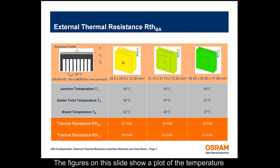The figures on this slide show a plot of the temperature distribution under steady-state conditions for heat sinks of various surface areas. Listed are the thermal resistances of the heat sink and temperatures at various reference points. As the surface area of the heat sink increases, the junction temperature of the LED decreases for the same applied conditions.